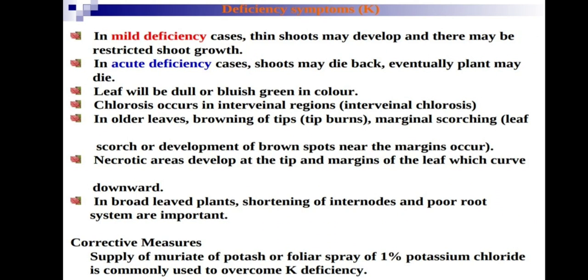In broad-leaved plants, shortening of internodes and a poor root system are important symptoms of potassium deficiency. Corrective measures include supply of muriate of potash or foliar spray of one percent potassium chloride to overcome potassium deficiency. Sulfate of potash, which contains 18 percent potassium, is also very helpful for plant growth.